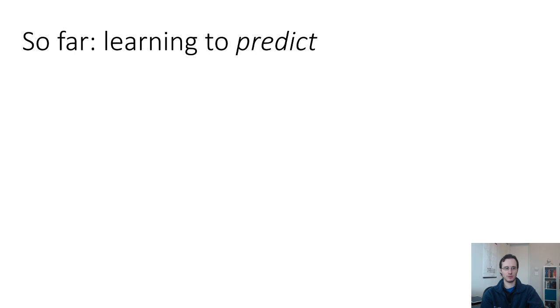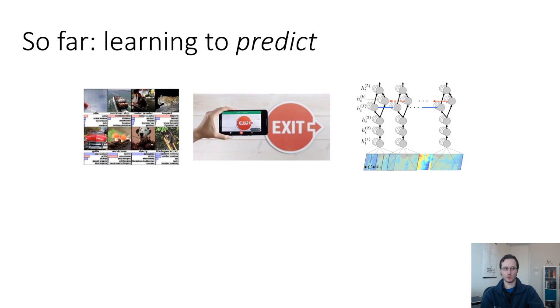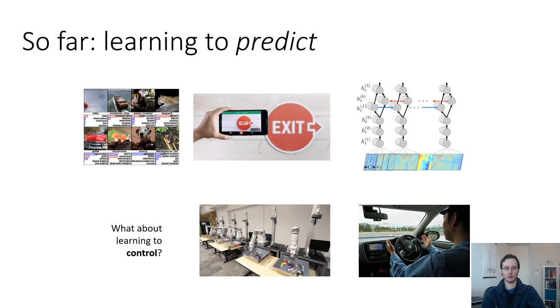So far, all of the deep learning methods that we learned about are focused on learning to predict. That could mean predicting the category of an object in an image from a picture, predicting the translation of a piece of text into a different language, or maybe even predicting words based on sounds for speech-to-text. These are all essentially prediction problems. However, when we deploy machine learning systems in the real world, oftentimes we're interested in using them to make decisions. When we enter the domain of decision-making, we're really dealing with control problems. Some of these control problems are ones we might think about intuitively, like controlling a robot or an autonomous car. Some of them are more subtle, like a machine learning system that makes decisions for a large e-commerce company on how to stock its warehouses.